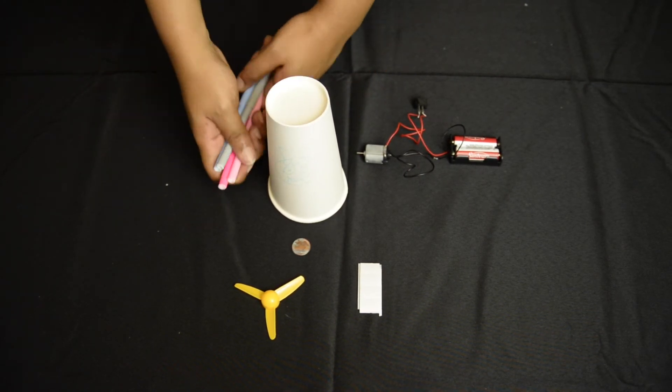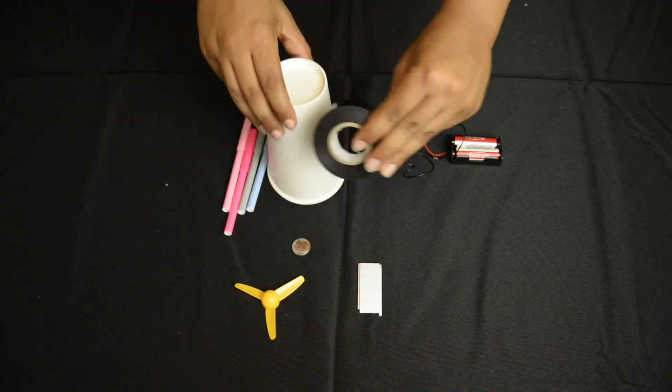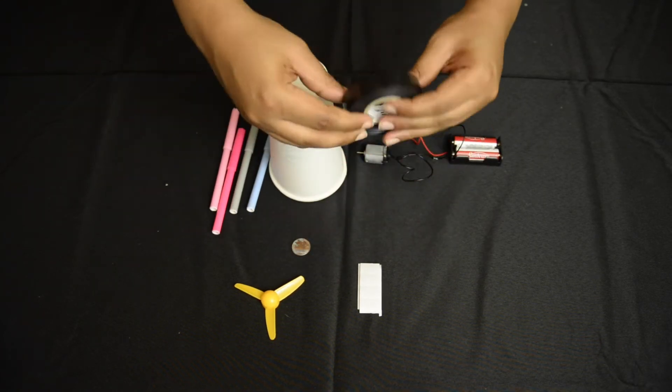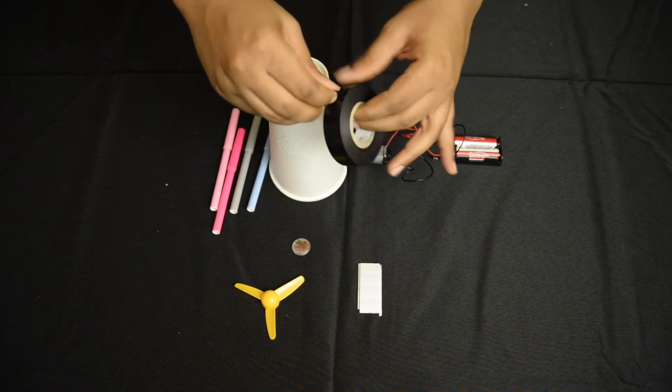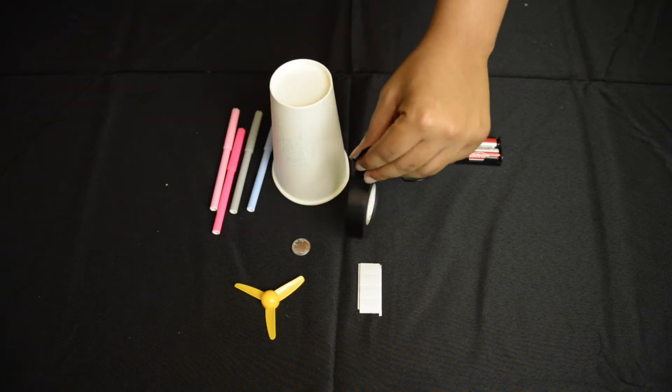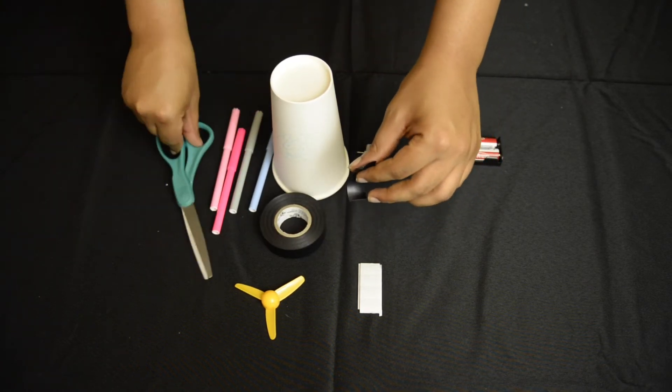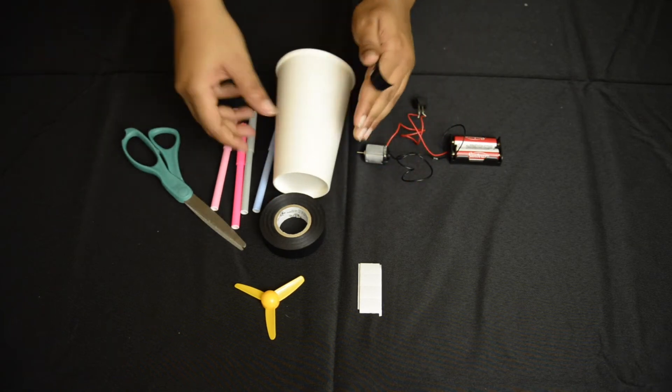Step five: remember those markers from earlier? Those are the legs of the bot. You're going to attach all four around the cup. The goal is to have them as even as possible. Use the rim of the cup and the cap top as guides.